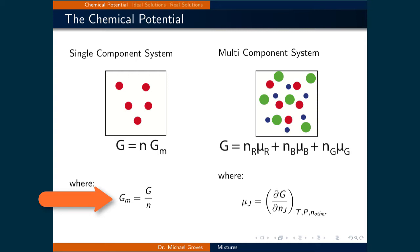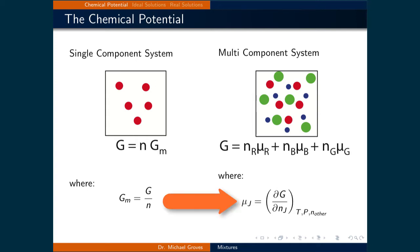In the previous lecture, we used the molar Gibbs free energy to define if a process describing a single component system was spontaneous, where the molar Gibbs free energy is simply the Gibbs free energy of the system divided by the number of moles of the substance. If there are multiple species in the system, as illustrated by the different colored dots in the figure on the right, then the contribution to the Gibbs free energy from each component is given by something called the chemical potential. The chemical potential for a component is defined as the partial derivative of the Gibbs free energy with respect to the number of moles of that component while holding the temperature, pressure, and the number of moles of the other components constant. Then, by multiplying the number of moles by the component's chemical potential and summing over all components, we would get the total Gibbs free energy of the system.